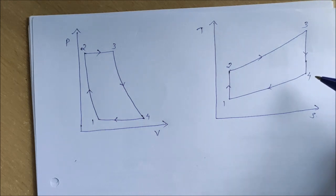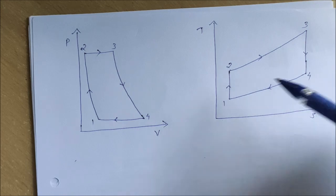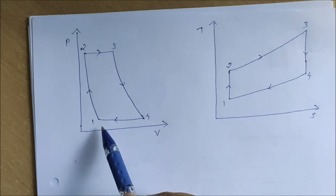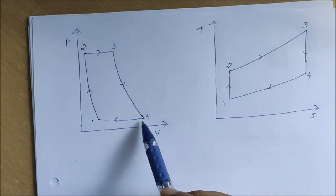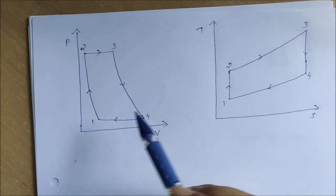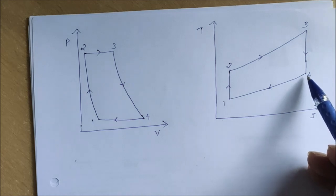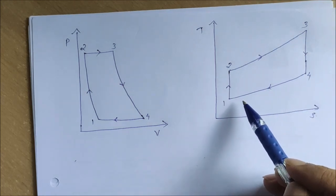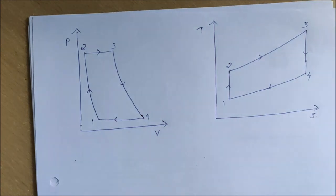The last process is heat rejection, also taking place at constant pressure, similar to process two to three. Process four to one is also an isobaric process. In the TS diagram, the four to one line shows temperature reducing as heat is rejected. That's all about the PV and TS diagram for a Brayton cycle.